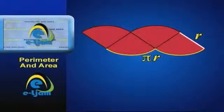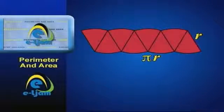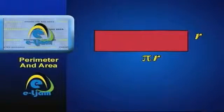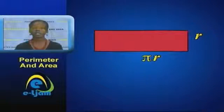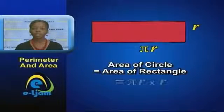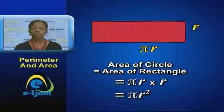However, this parallelogram has arcs on both its top and bottom, so we still don't know how to calculate its area. To solve this problem, we cut the original circle into a greater number of equal sectors. As we increase the number, the arcs become smoother and the parallelogram looks more and more like a rectangle. As the number approaches infinity, the bumped parallelogram becomes a perfect rectangle, with its width equal to pi times r and its height equal to r. The width of this newly formed rectangle equals half of the circumference of the original circle and the height is equal to the radius r. As a result, the area of the circle equals the area of the rectangle, which is pi times r times r — this is equal to pi r squared.